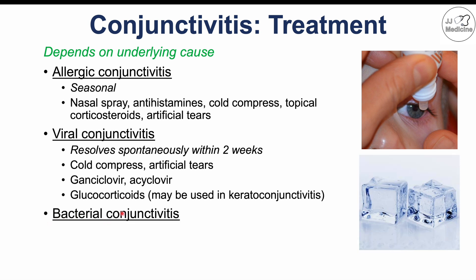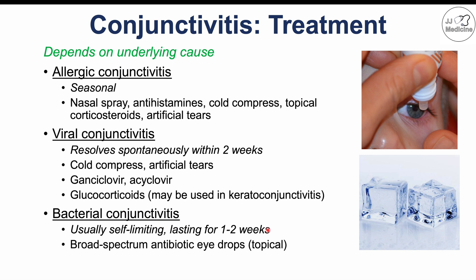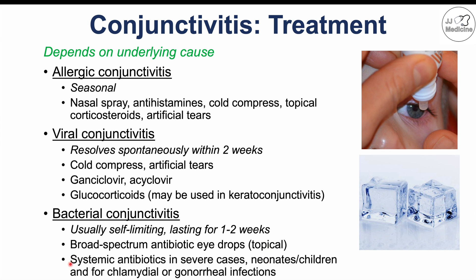Bacterial conjunctivitis is usually a self-limiting infection lasting one to two weeks, but the most helpful treatment is broad-spectrum topical antibiotic eye drops, which can resolve the infection quickly. In very severe cases with systemic signs and symptoms, systemic antibiotics may be used — particularly in severe cases, in neonates and children, and especially for chlamydial and gonorrheal infections, which can cause very severe complications in some individuals.